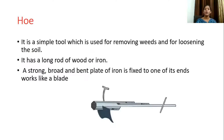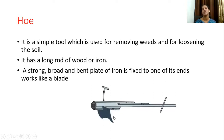The hoe is another instrument used for loosening the soil. It is a simple tool used for removing weeds and also for loosening the soil. It has a long rod of wood or iron. The working part is made up of iron — a strong blade plate fixed at one end that works like a blade for removing weeds and loosening the soil. So the hoe and the plow are both used for loosening the soil for the preparation of soil.